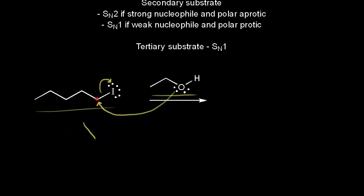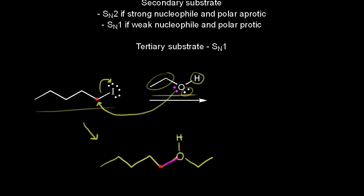Let's draw what we would form. We sketch in our carbon chain, and a bond forms between the oxygen and the carbon in red. The oxygen is still attached to this ethyl group, so let's draw in those two carbons. The oxygen is still bonded to this hydrogen. We still have a lone pair of electrons left on this oxygen, which gives us a plus one formal charge on the oxygen.